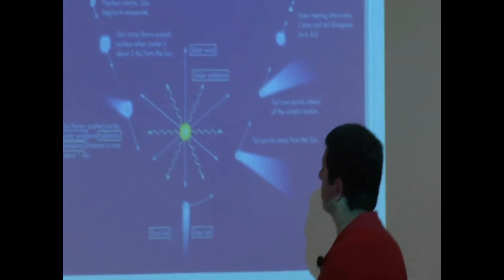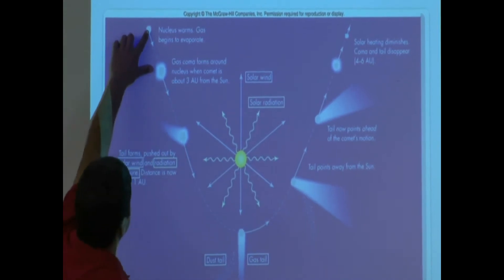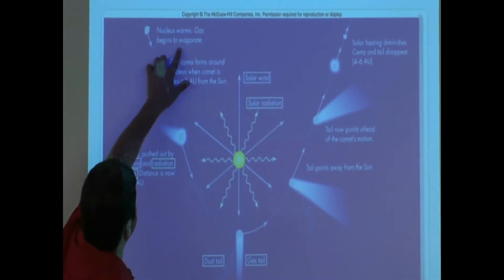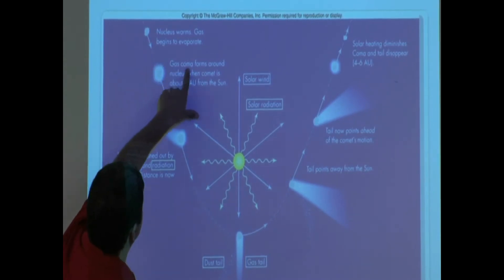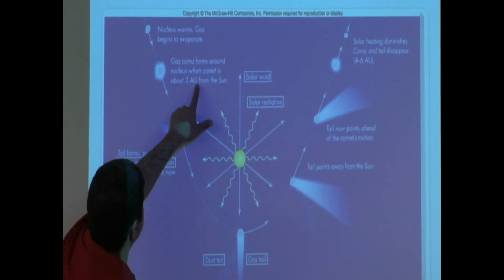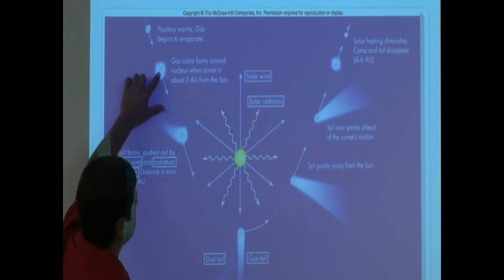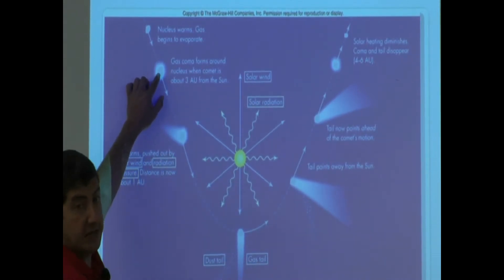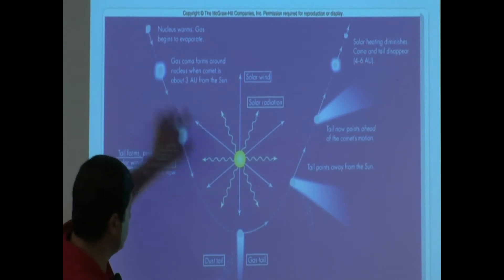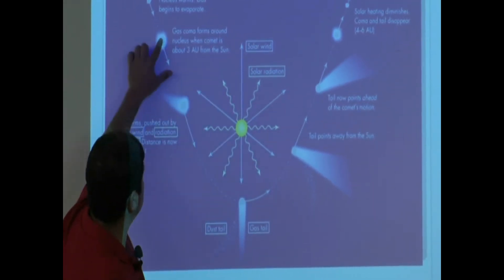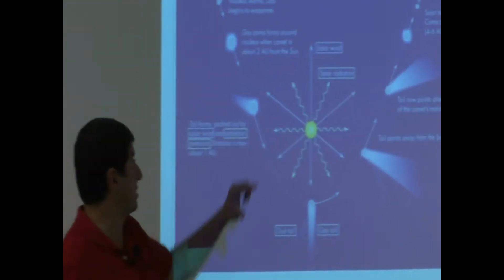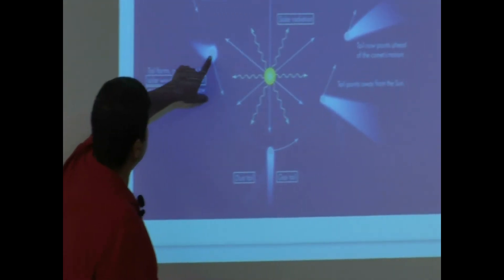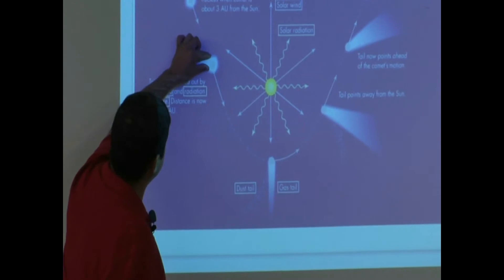We can see it here. You see the comet is beginning here, nucleus warms, gas begins to evaporate. Gas coma forms around the nucleus when the comet is about 3 AUs from the sun. So when the comet is coming right around 3 AUs, and then this is the sun right here, it starts getting really hot. The coma starts growing. As it comes closer, you see the tail starting to form.